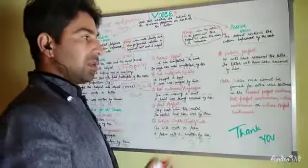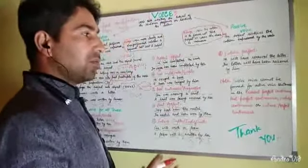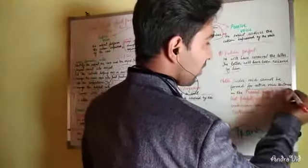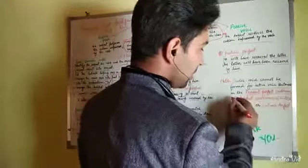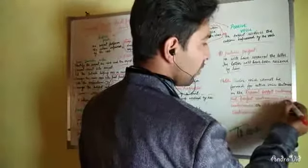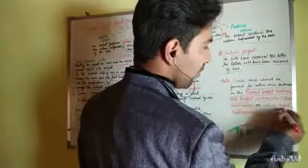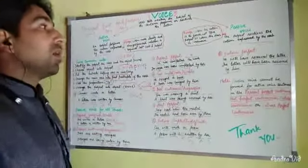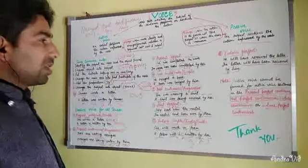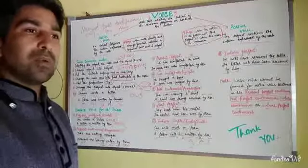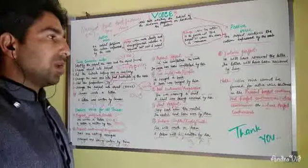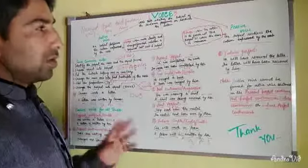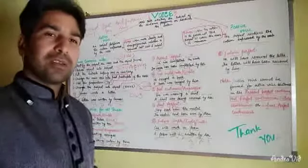Some tenses cannot form passive voice. Passive voice cannot be formed for sentences in present perfect continuous, past perfect continuous, future continuous, or future perfect continuous. These tenses can't be changed into passive voice. That was all about tenses. I'll take another video covering rules for imperative sentences and other sentence types as well. Hope you liked it — thank you very much.